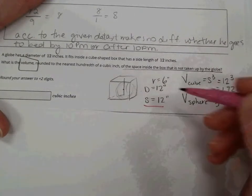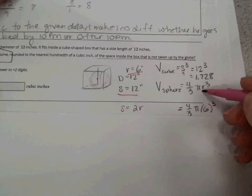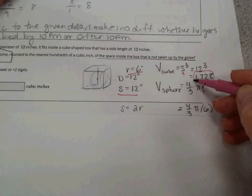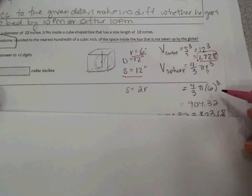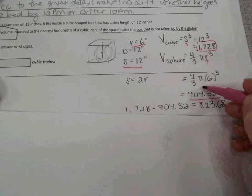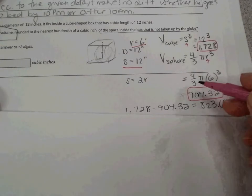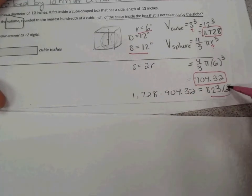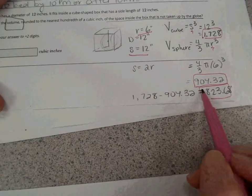So, we have the side, we have the radius. Those are the only two variables in our two equations. If we plug those in, then I get 1,728 as the volume of my cube. I get, for 4/3 pi r cubed, I get 904.32, and that would be cubic inches for the sphere. And now, I subtract the two and get 823.68 as the difference, so that would be my final answer.